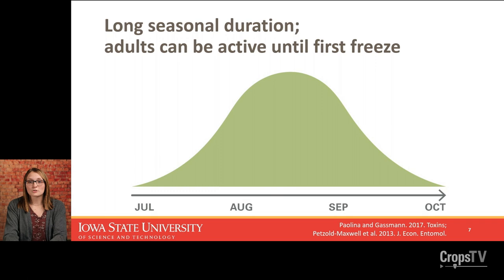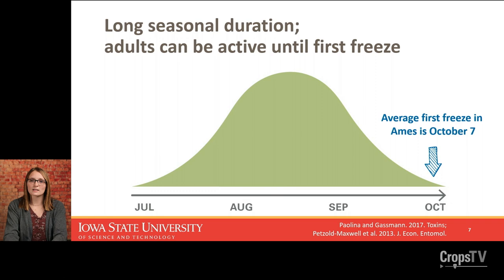We can see those adults pretty much all throughout the growing season — once they start emerging in late June or early July, all the way until the first freeze, which typically happens in October. The average first freeze in Ames is October 7th; for northern counties it would be slightly before that. It's not uncommon to get reports of people seeing adults feeding around their houses all the way into October.